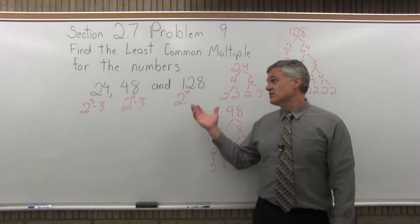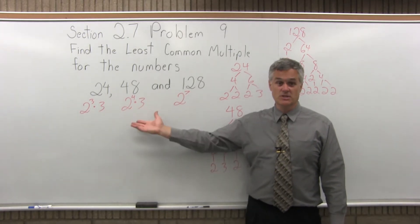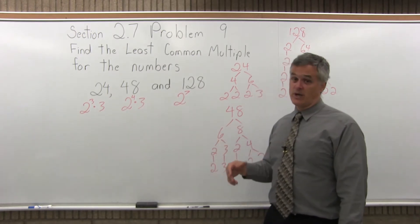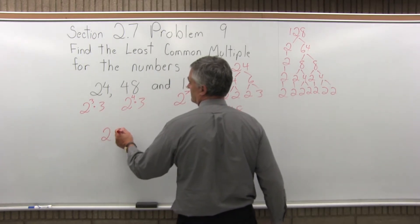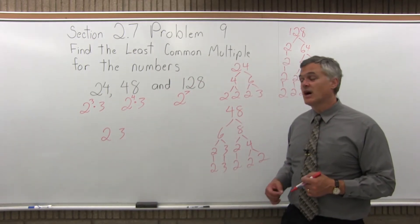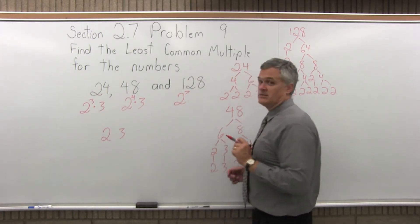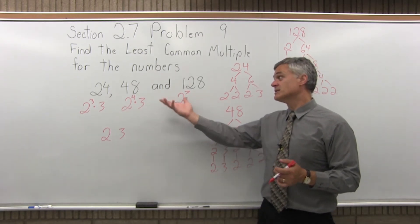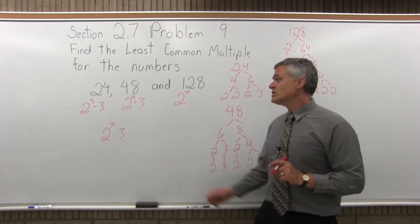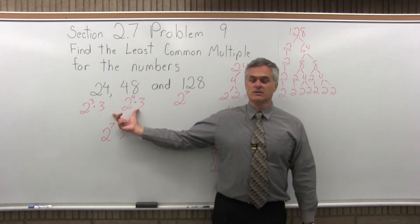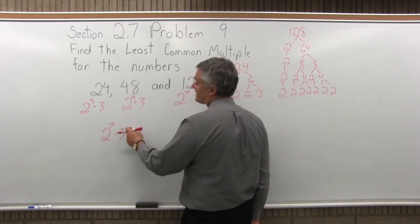I have the prime factorization of each number. There's three of them instead of two for this problem, but it's the same process. Next step: write a list of the primes used in any of the prime factorizations. I have 2 and 3. Then where I have exponents, I choose the largest exponent. For the 2s, I have 3rd power, 4th power, 7th power. I want the largest—7th power is bigger than 3rd and 4th power, so that's the exponent I take. 3 shows up in two different spots, but both times only to the 1st power, so my answer stays to the 1st power.